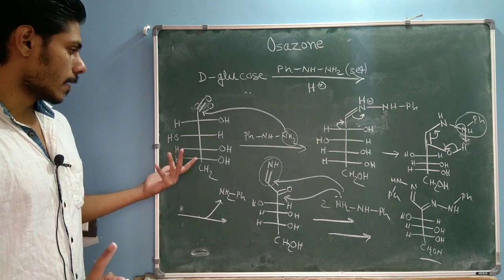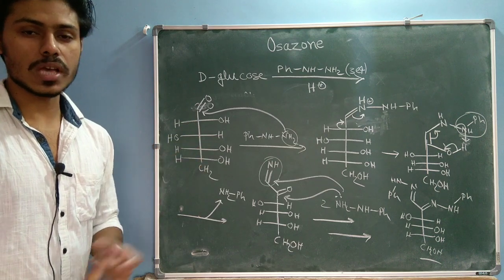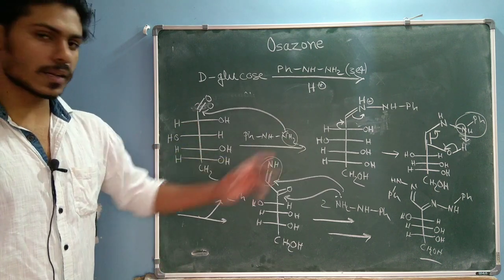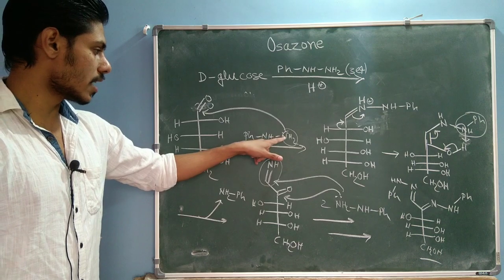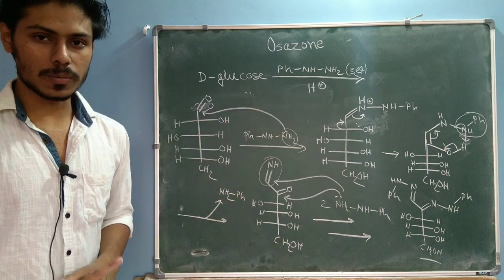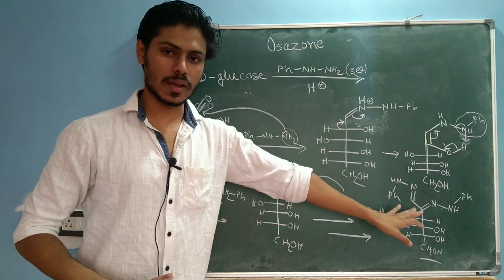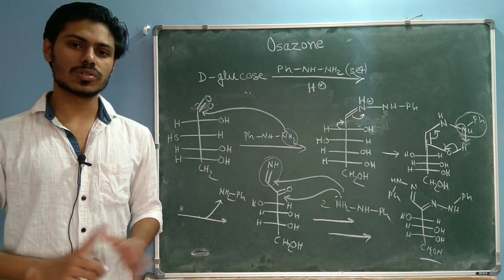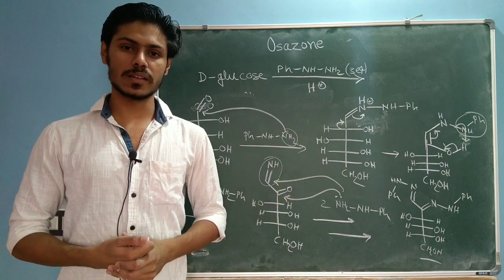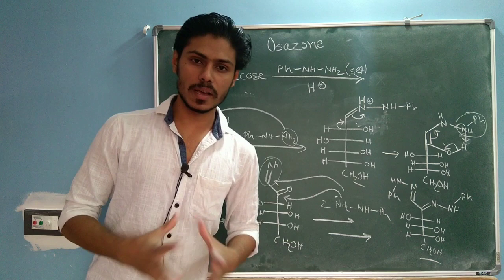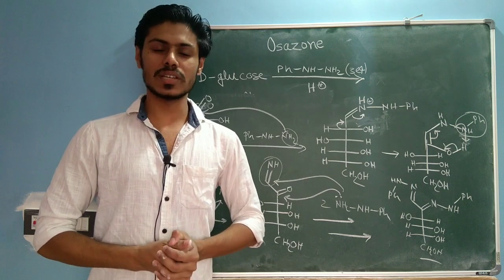This mechanism also explains why the carbonyl group must be at C1 or C2. For fructose, with the keto group at C2, the same mechanism applies — the NH₂ group attacks C2, the Amadori rearrangement proceeds, and you get the same osazone. I encourage you to try working through the fructose mechanism yourself; if you can't get it, the full mechanism is available on my blog linked in the description. That's all — I hope you understood the mechanism and all important details about osazone. Thank you for watching!